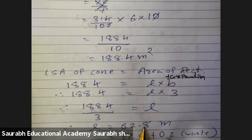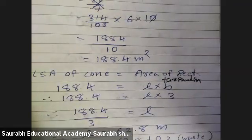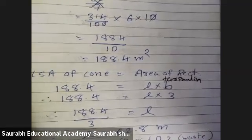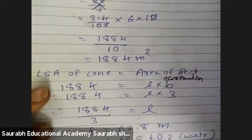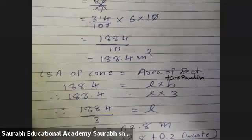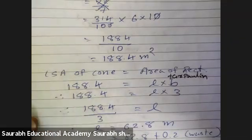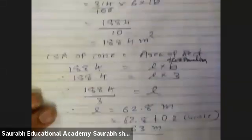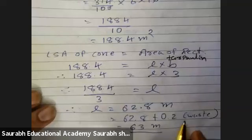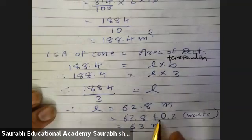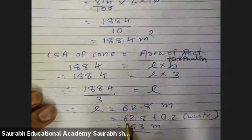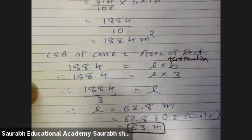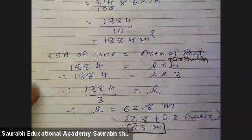There is another information: stitching margin and wastage in cutting is approximately 20 centimeter, which means 0.2 meter. So 62.8 plus 0.2 gives a final answer — length of tarpaulin is 63 meter.